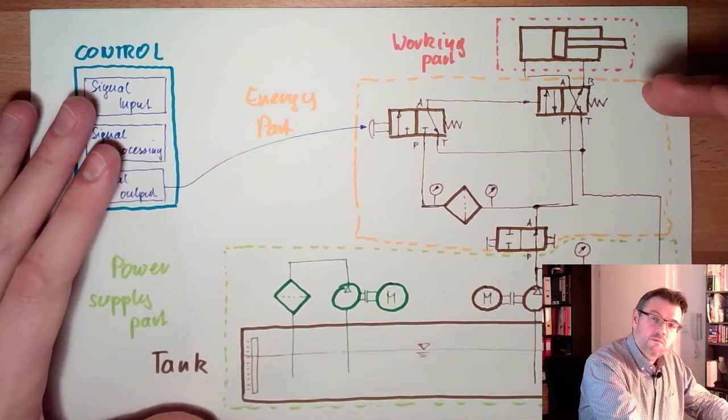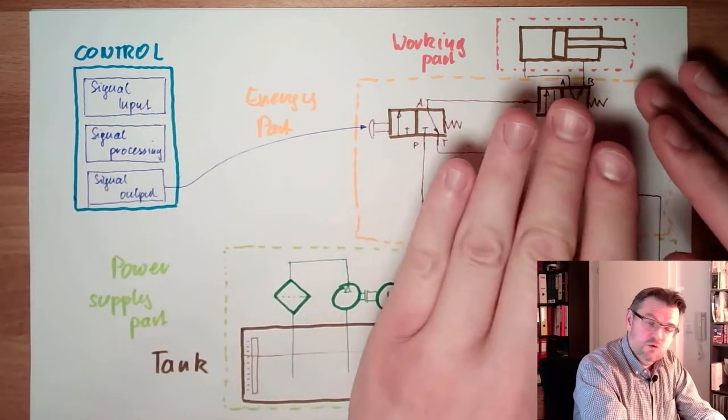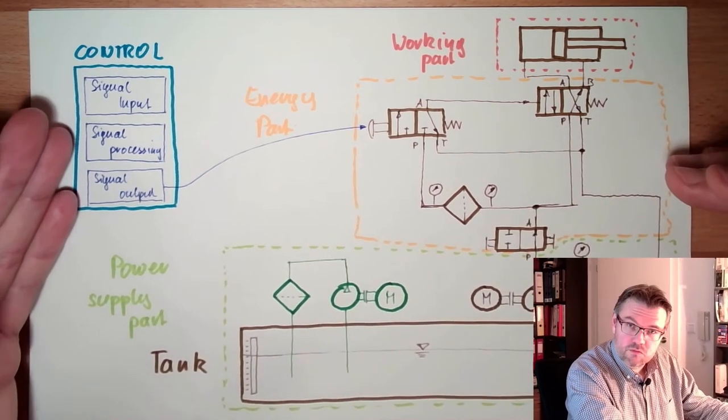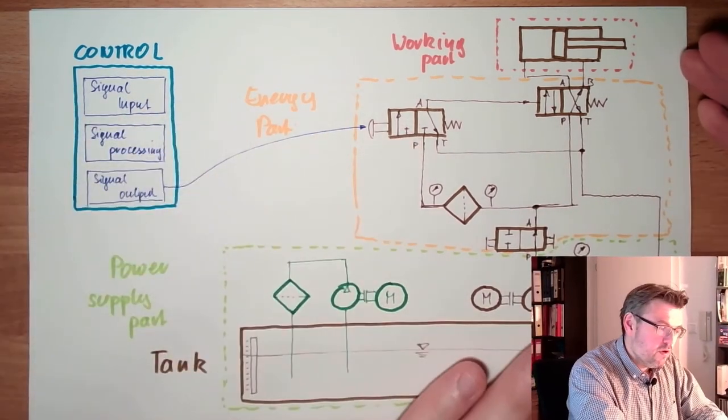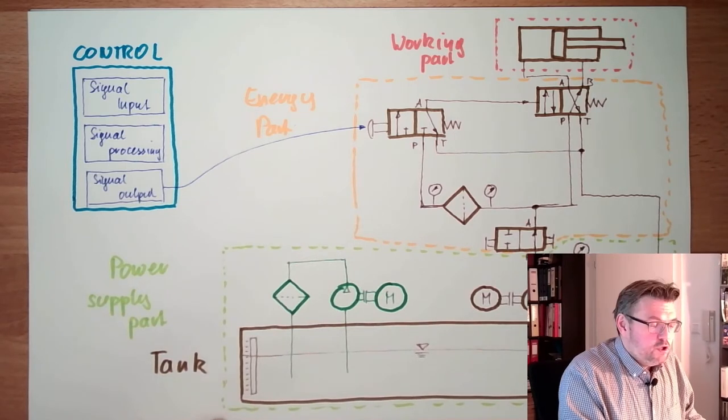There's the working part where actually something is doing. There's the energy part where the energy is distributed somehow to rules which come from the control part to the working part. And then there is the power supply part or energy power supply part.